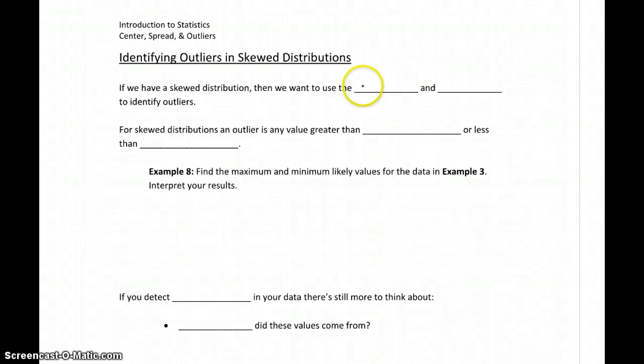If we're dealing with a highly skewed distribution, then again we should be using the median as the measure of center, IQR as the measure of spread. So those are the two values that we want to use when we look at identifying outliers.